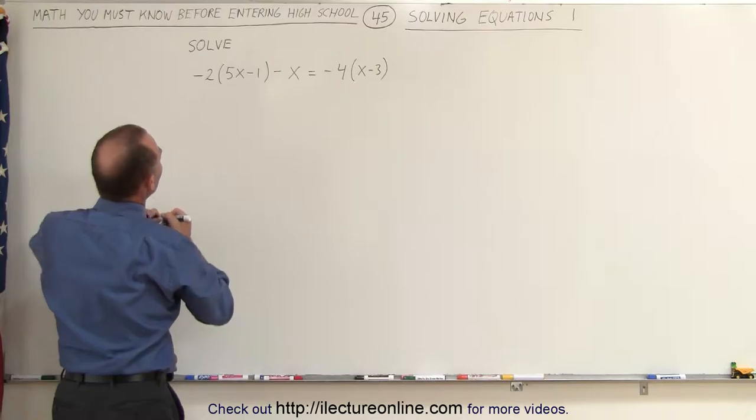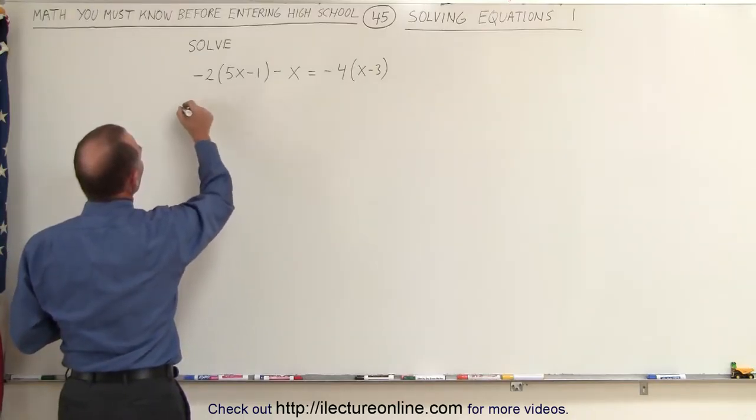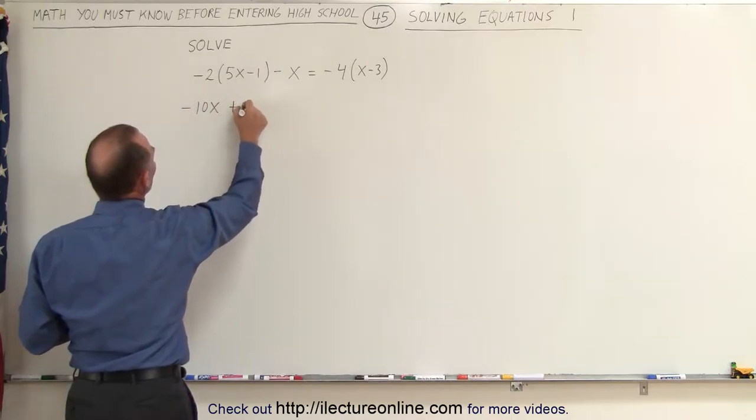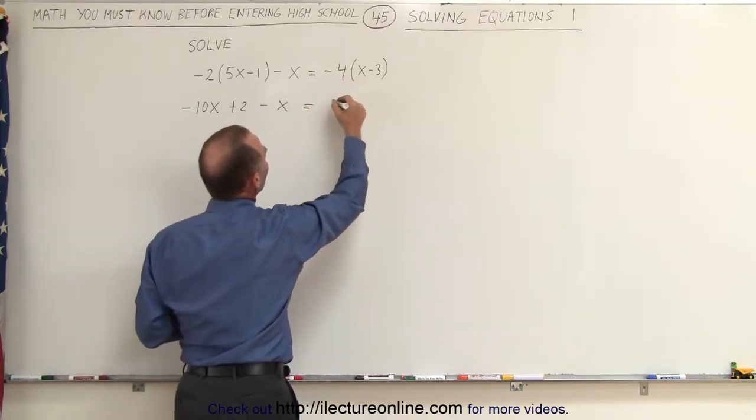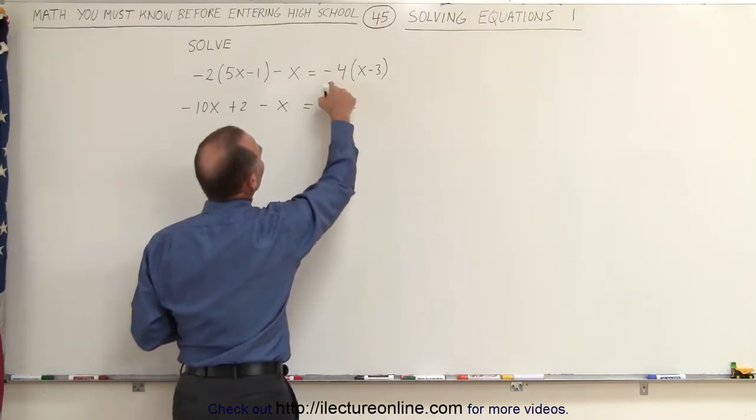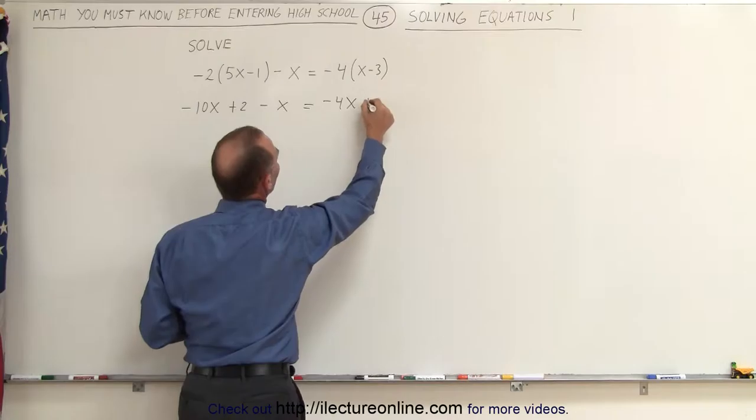When we do that, we get the following: minus 2 times 5x is minus 10x, and minus 2 times minus 1 is plus 2. We still have the minus x equals minus 4 times x is minus 4x, and minus 4 times minus 3 is plus 12.